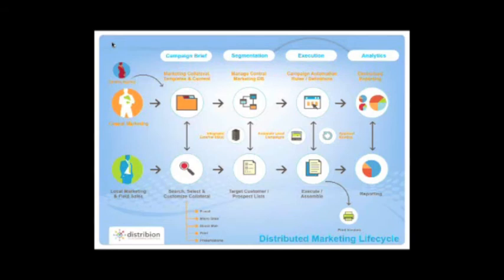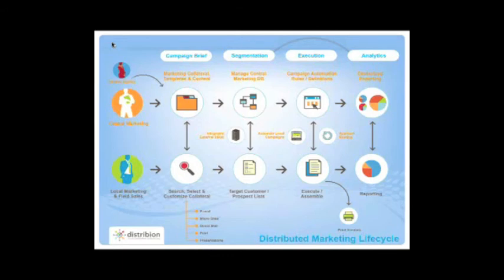The next layer is local marketing and field sales — or agents. From an agent's perspective, an agent can come in whether it's a corporate push where an agent can opt in or opt out of the program, or from a home office standpoint where the agent is given the permissions to develop and leverage different types of assets from corporate — sending that information out via email, microsite, direct mail, print, and presentation. There are also additional layers such as surveys that we can talk about.